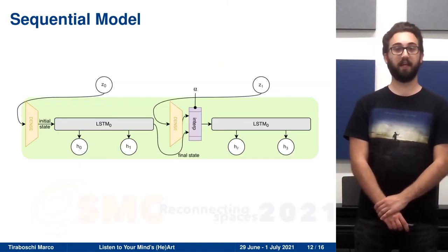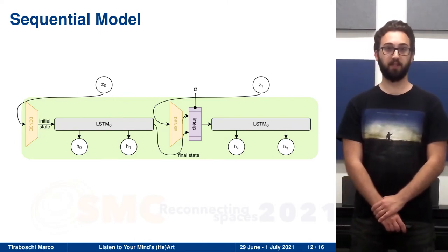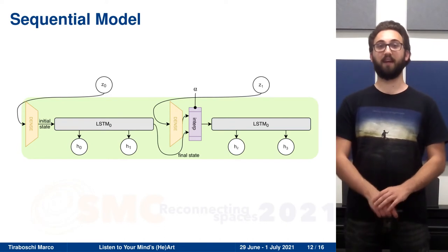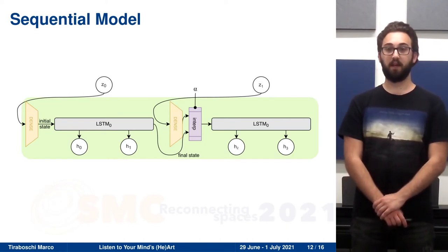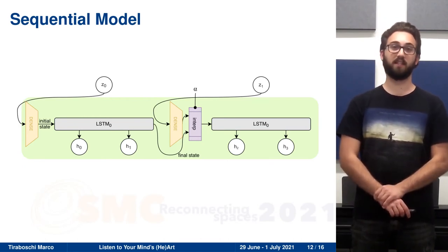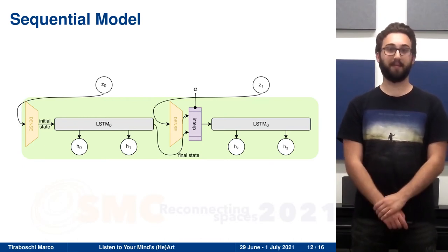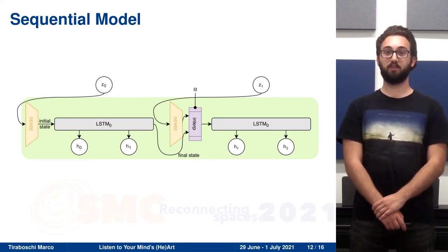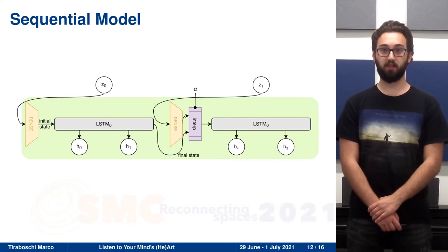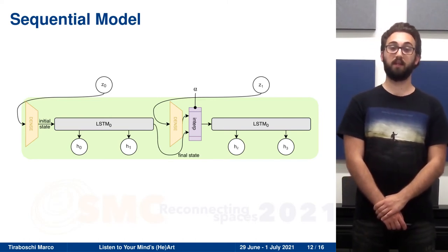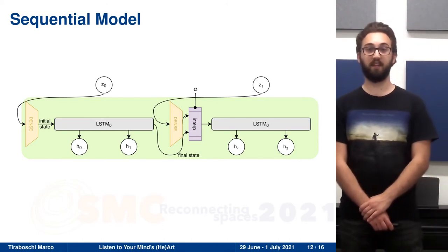Every so often, we can interrupt the current state of the network with a new state computed with a different feature vector. In this way, we can change the music characteristics in real time while the model is generating the music. But now there is one more problem. We don't know what the MusicVAE features represent. So we need a model that allows us to map the emotion to the MusicVAE latent space.